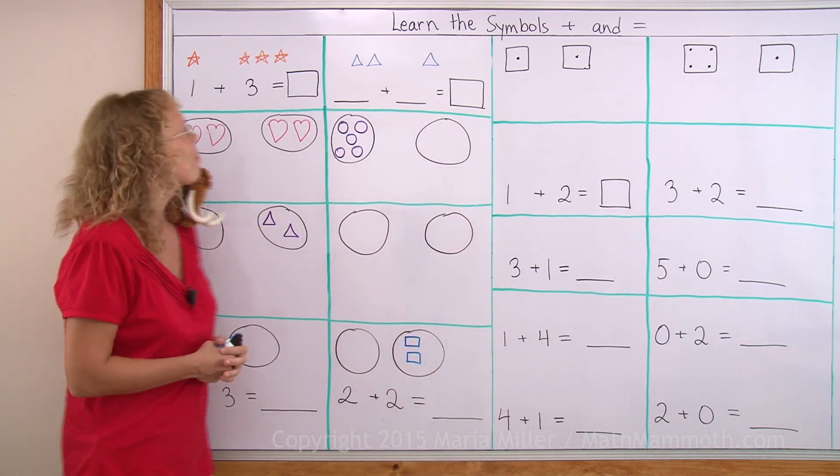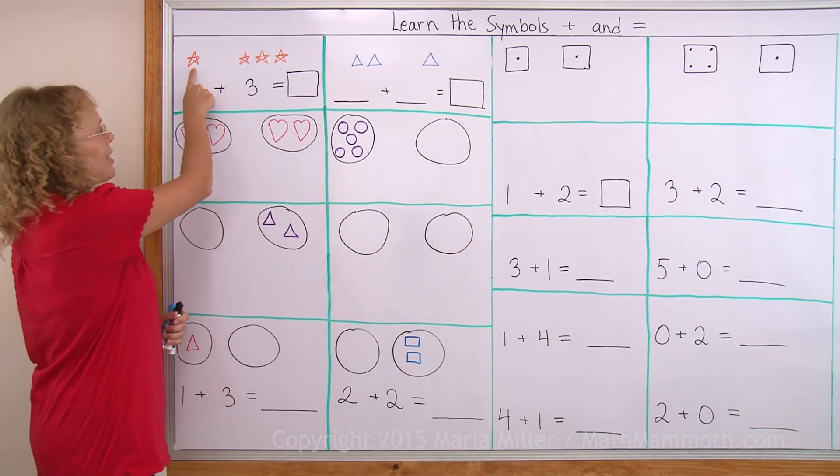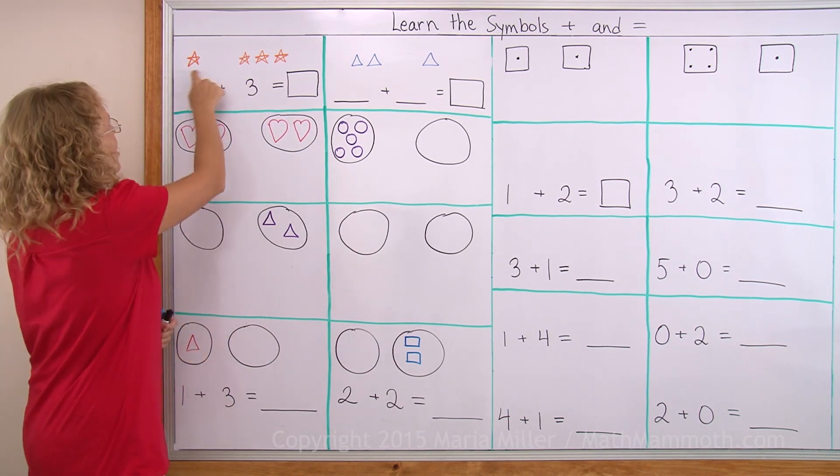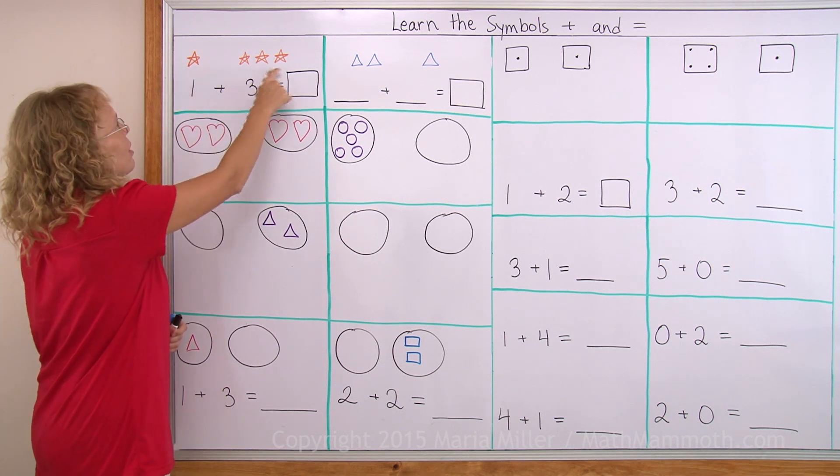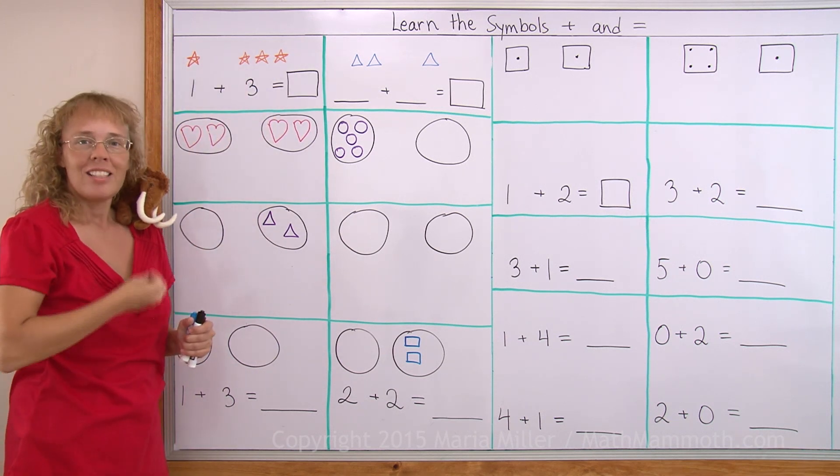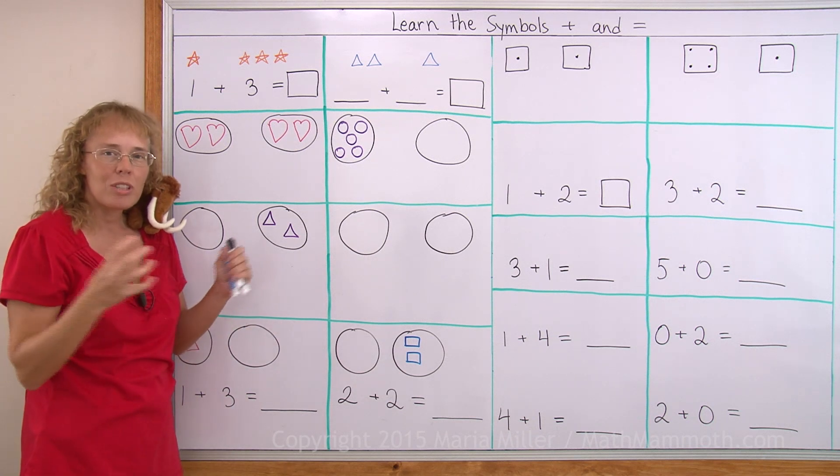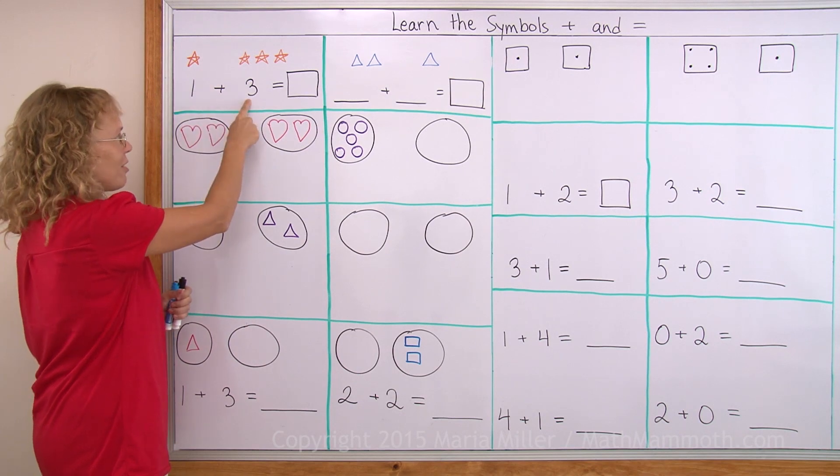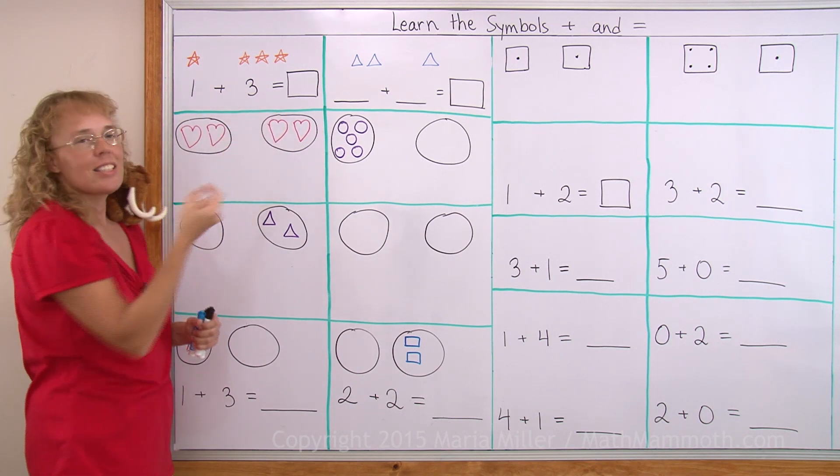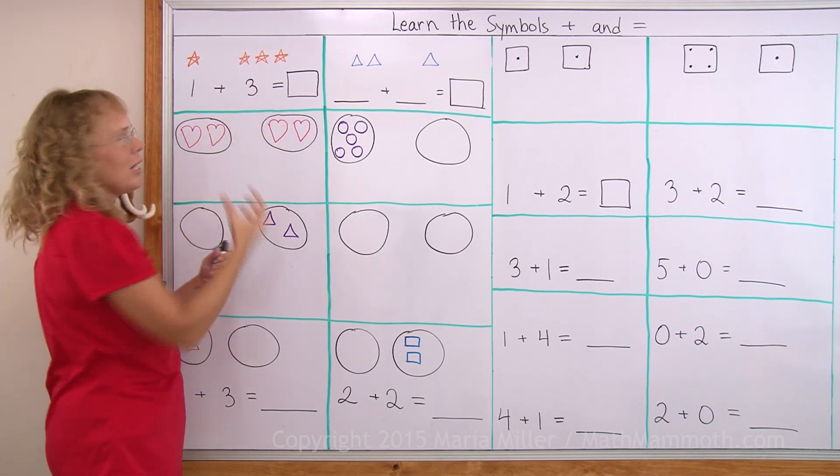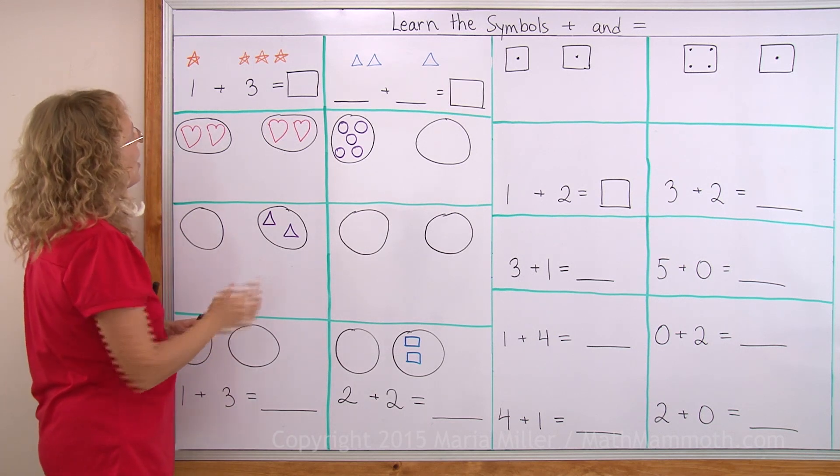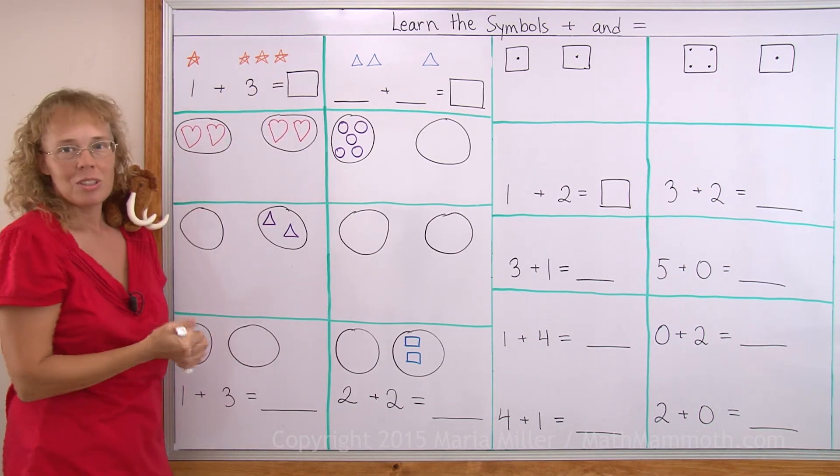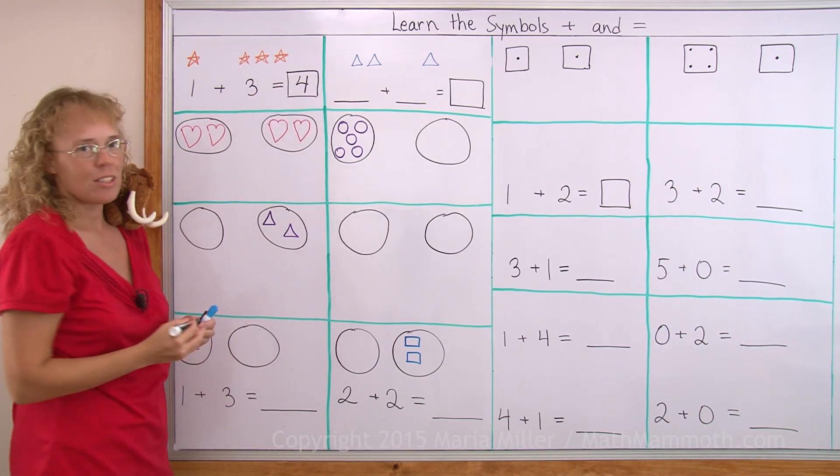We're still studying addition. Here for example I have one star and then I have three stars. You can think of them as two groups. It's a group of one star and group of three stars and we are adding one and three. We are adding them together, putting them together and so we read this as one plus three and this sign is read as equals. It basically means is in total and now we count how many in total? One, two, three, four. So four goes in this box. Four is the total.